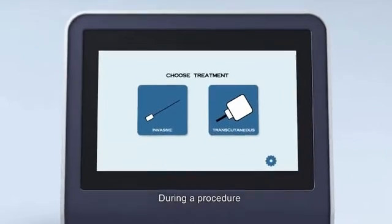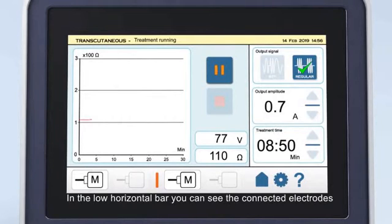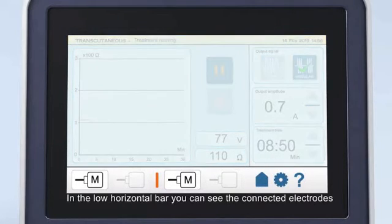During a procedure the screen shows all the information you need such as impedance and remaining treatment time. In the lower horizontal bar you can see the connected electrodes.